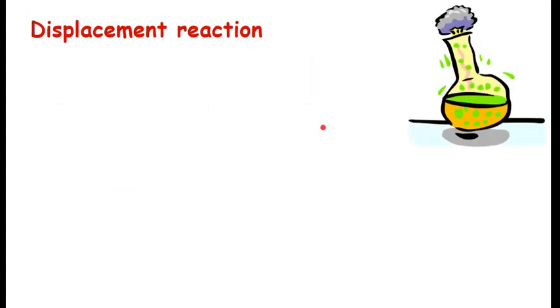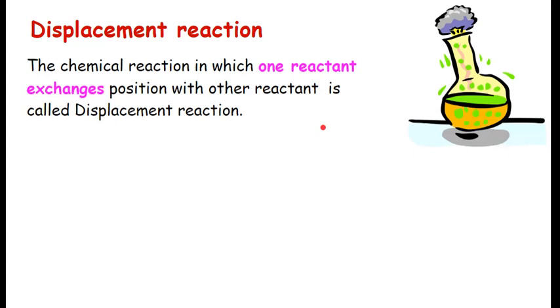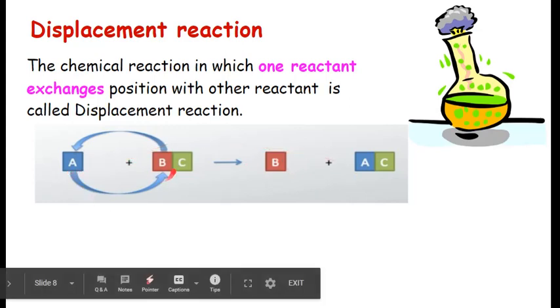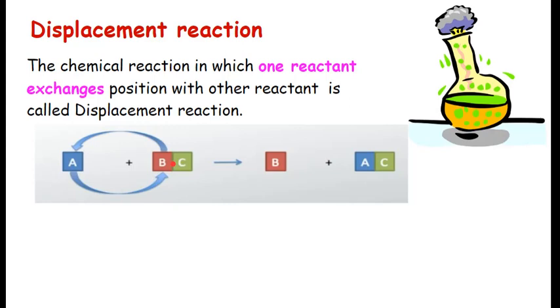Moving ahead from here, third one which is called displacement reaction. Displace means what? To shift something. For example, you are displacing the cupboard in your house, you are moving it from one place to another. You are displacing the chair, you are moving the chair from one place to another. So, the chemical reaction in which one reactant exchanges position with another reactant is called displacement. One reactant is exchanging position with another. How? Look at this. Here I have A and here I have BC. Here A has displaced B. So B became separate. A came together with C. So what did A do? A displaced B, pushed it aside and removed it. A has displaced B. So, this is a displacement reaction.